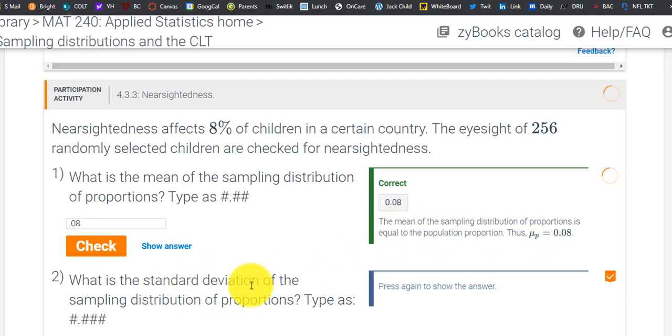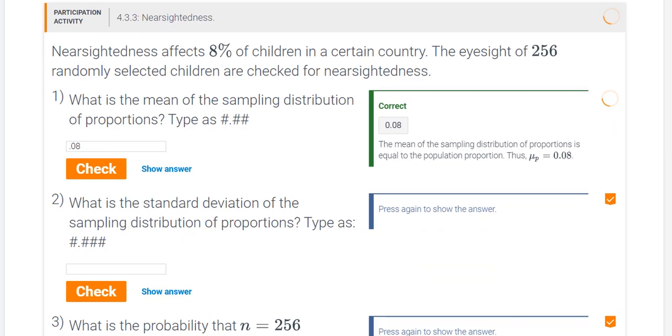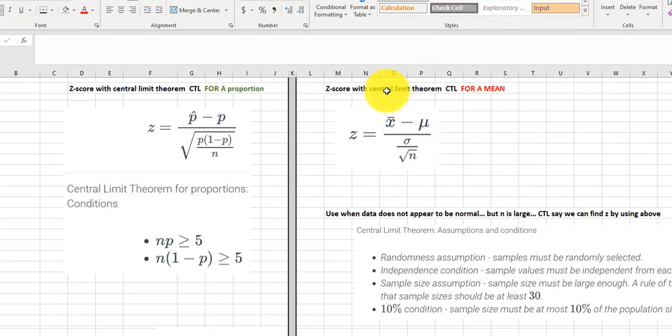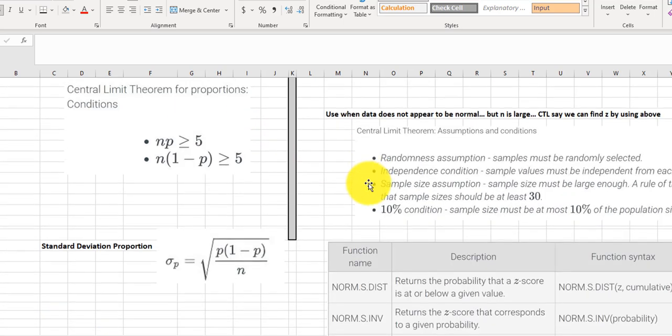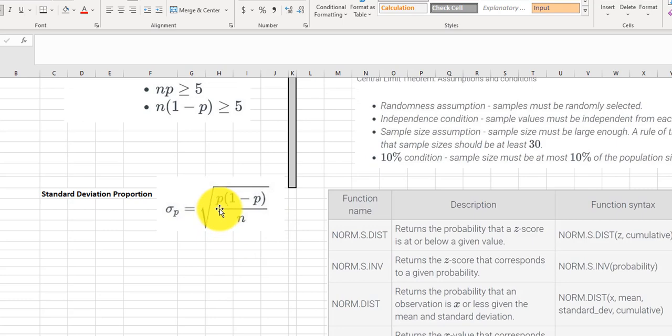What is the standard deviation? So I have a little cheat sheet here. The standard deviation would be this bottom part, the denominator here, when we're trying to calculate the z-score. Here we go. So standard deviation would look like this, the proportion times 1 minus the proportion divided by n.